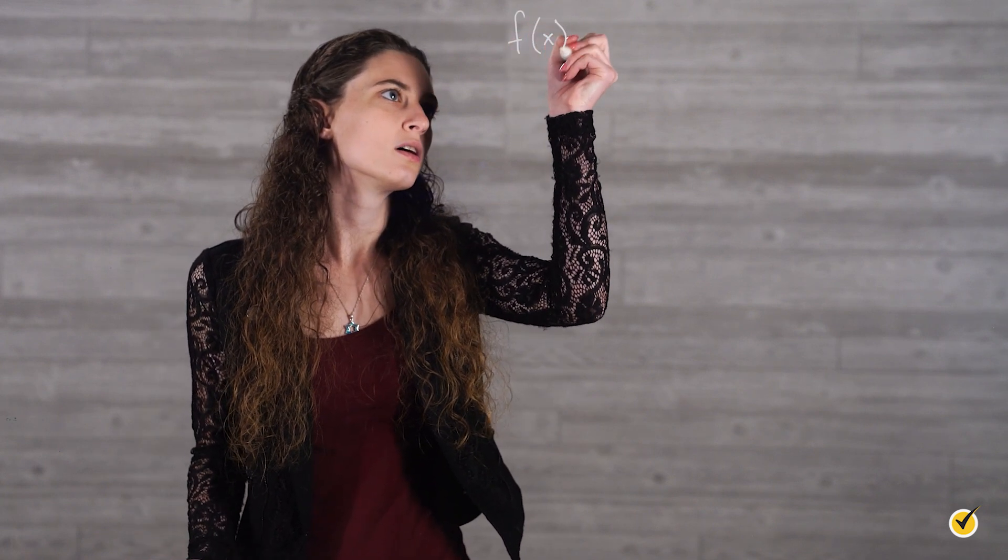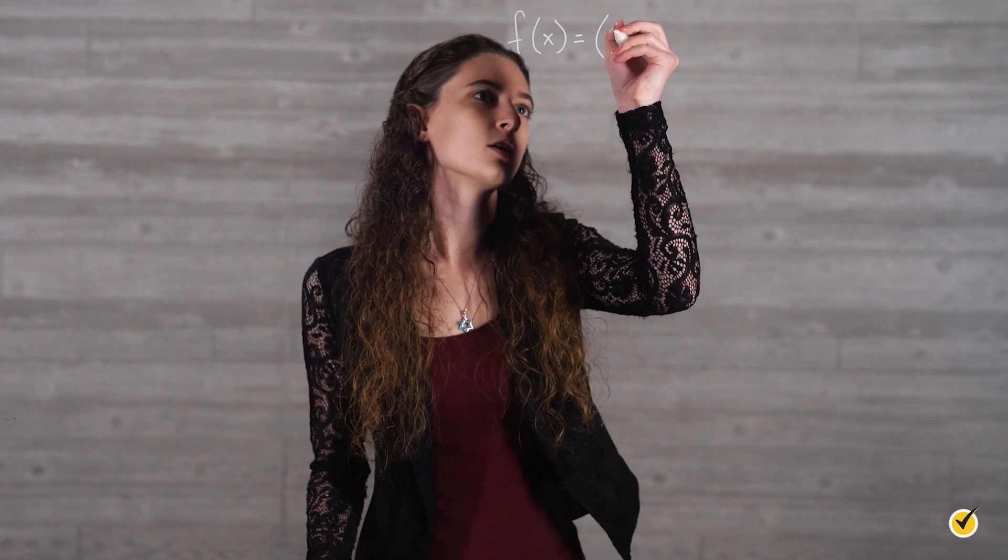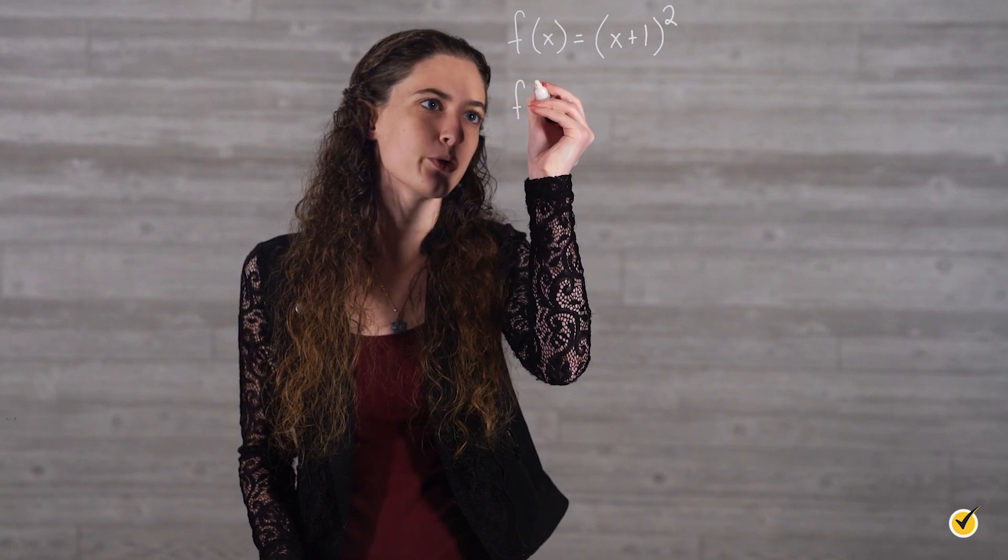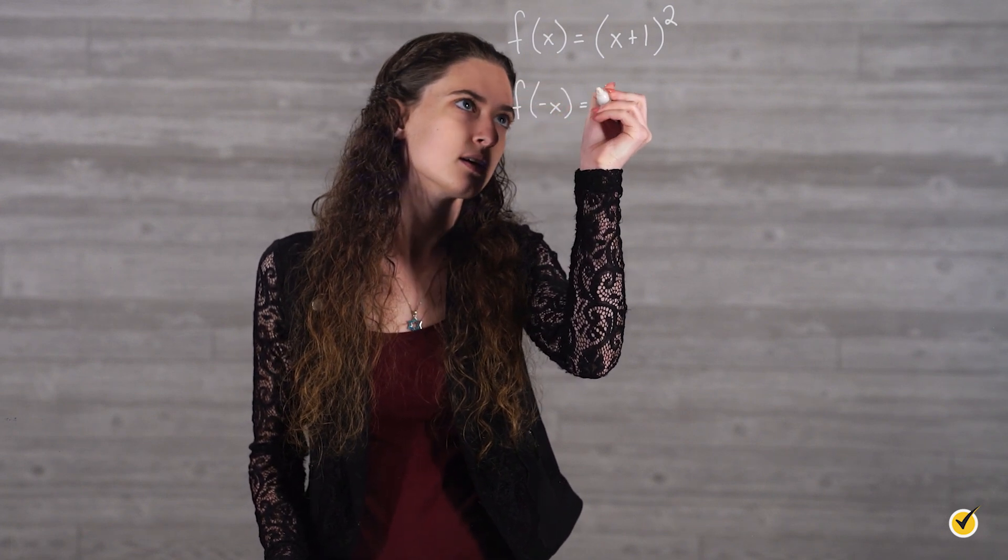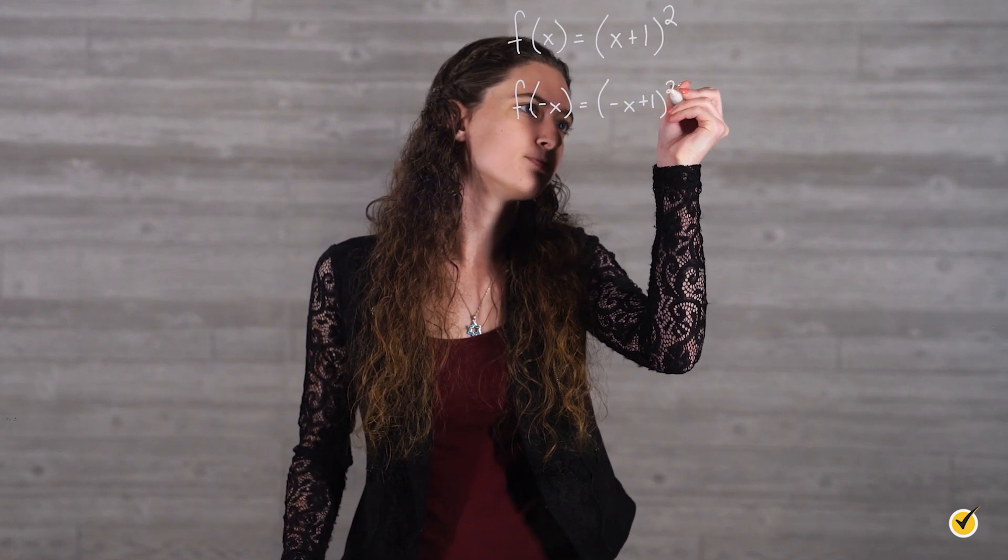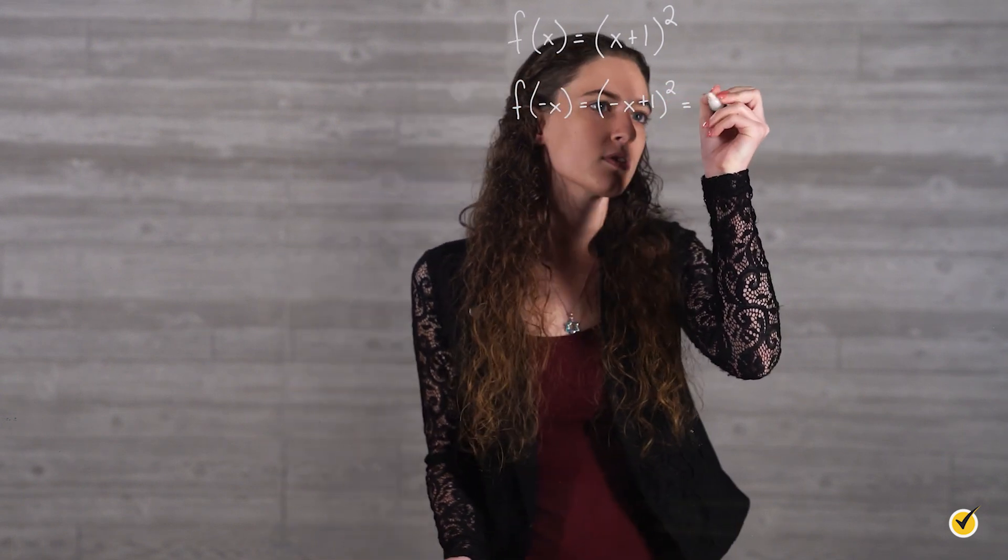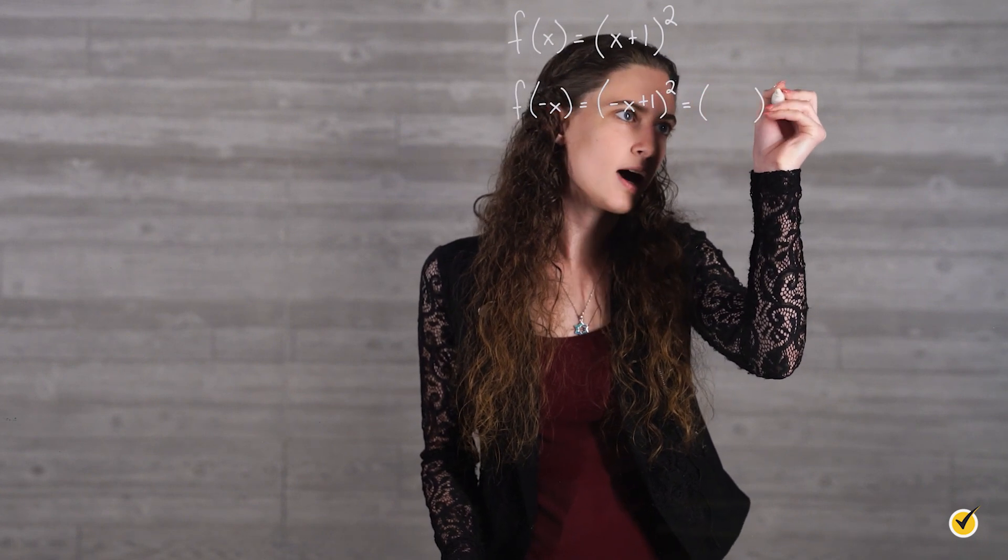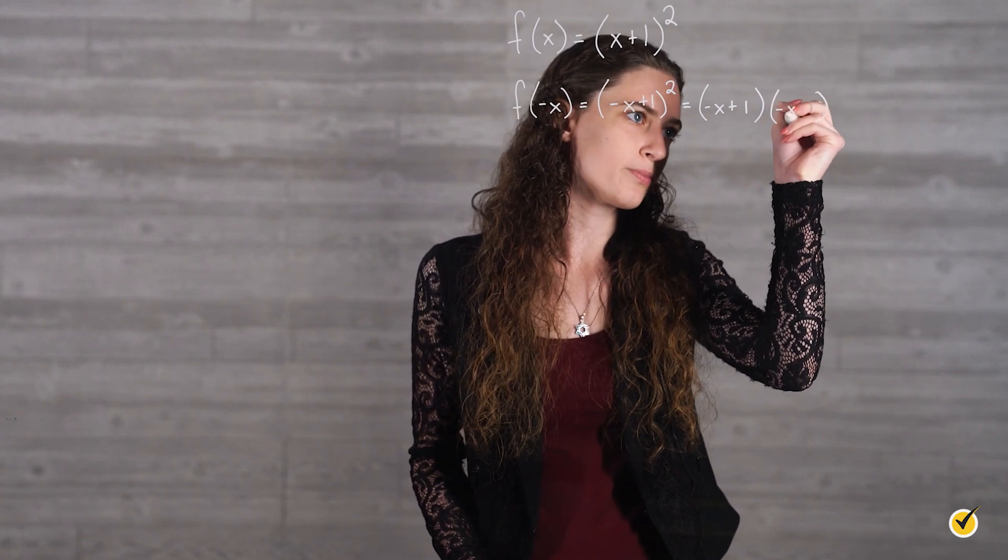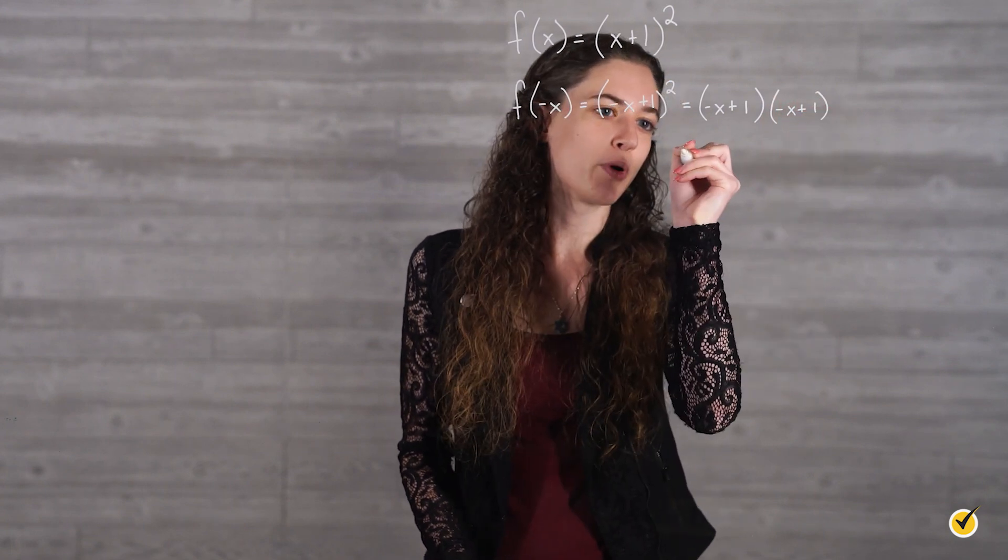But we can also determine this algebraically. So our function is f equals (x + 1) squared. And remember, to determine if it's even or odd, we want to evaluate it at negative x. So we have (-x + 1) squared, which we can write as (-x + 1) times (-x + 1), because that's what the squared means. And then from here, we can FOIL.